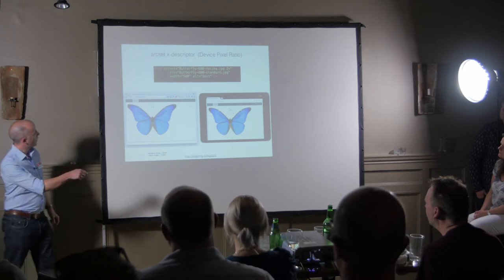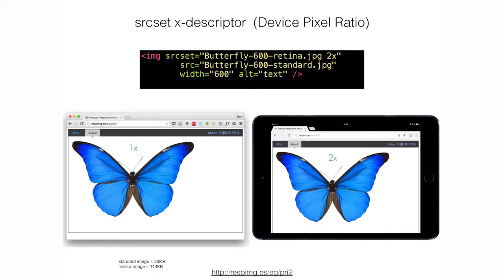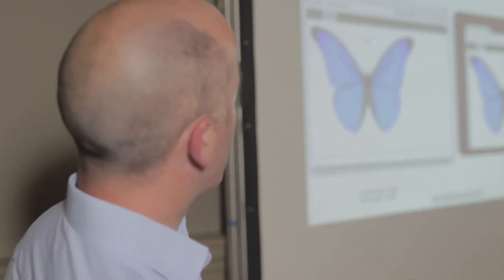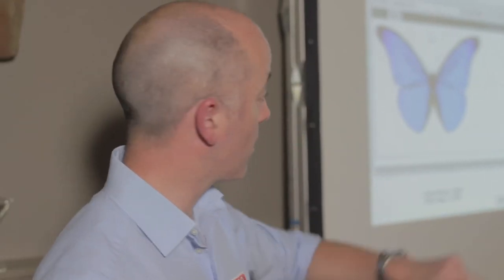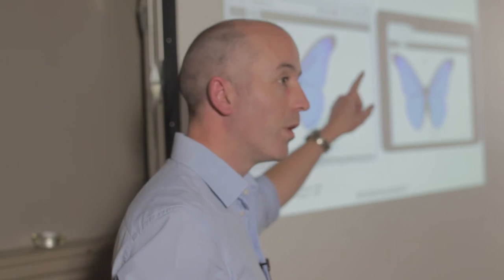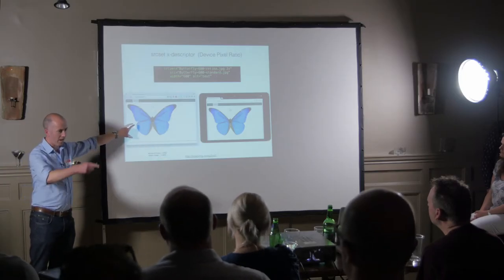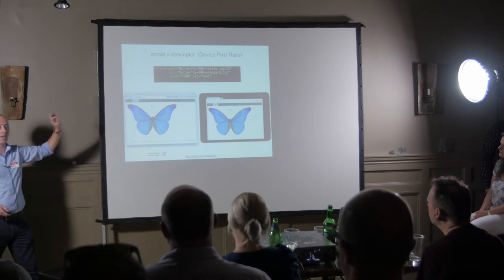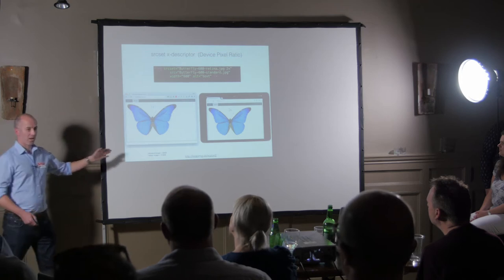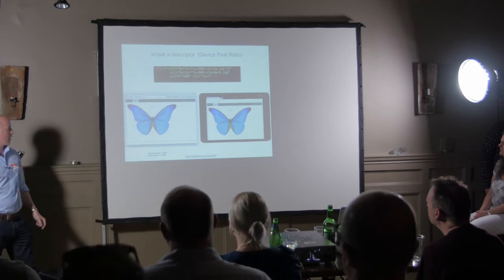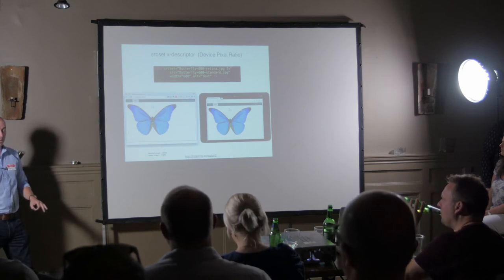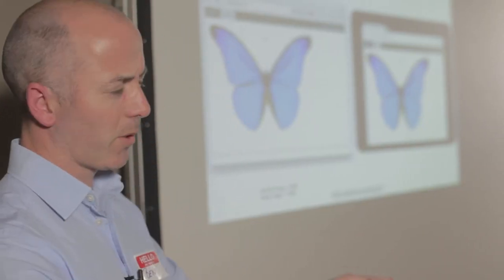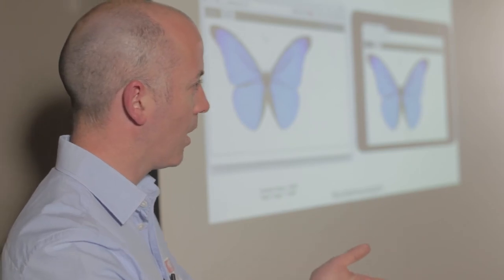In this example I've said there's an image which is butterfly-600 and an image which is the retina version — a higher pixel-ratio image. By putting that '2x' descriptor in there, any browser that recognizes it will know that if you're on a retina device like an iPad mini, it will fetch the really nice one. On my older non-retina Mac it gets the standard one. The difference in weight is one is 34K and the other is 113K — so for people coming to your website this alone is pretty useful.